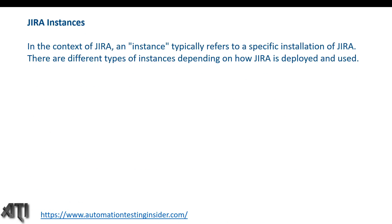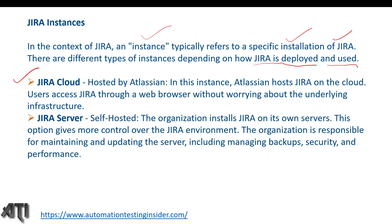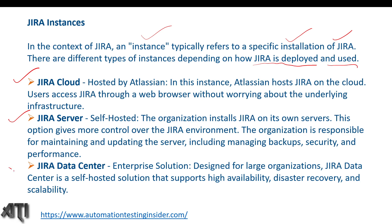In the context of Jira, an instance typically refers to a specific installation of Jira. There are different types of instances depending on how Jira is deployed and used. There are three instances available: Jira Cloud, Jira Server, and Jira Data Center. Currently Jira Server is no longer available — we now have Jira Cloud and Jira Data Center — but let's talk about all of them in detail.